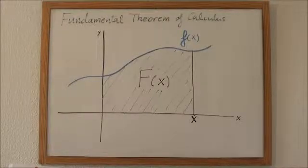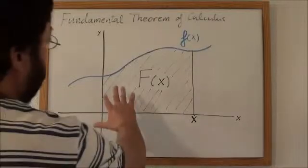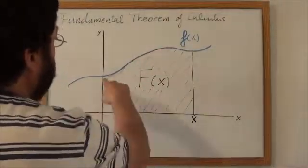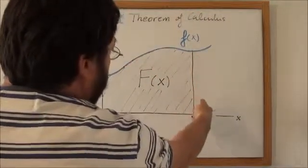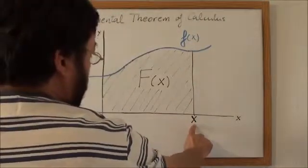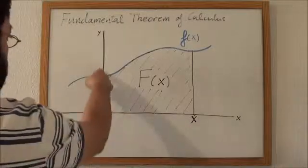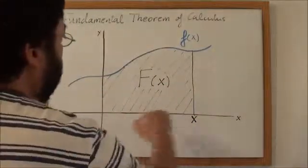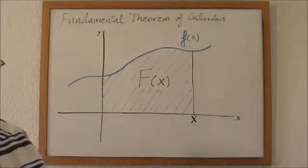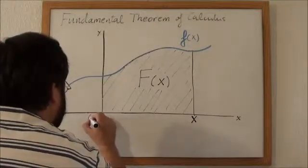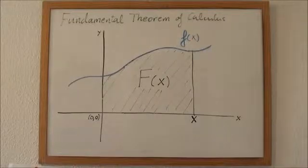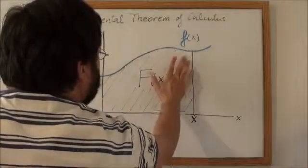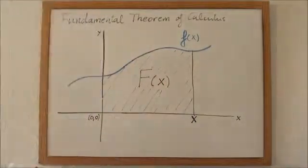Uppercase F is defined as the area included in this region — the region under the function f, bounded by the vertical line at coordinate x, and the positive side of the x-axis. So this is the origin, zero, and we define uppercase F as a function giving us the area included in this region.